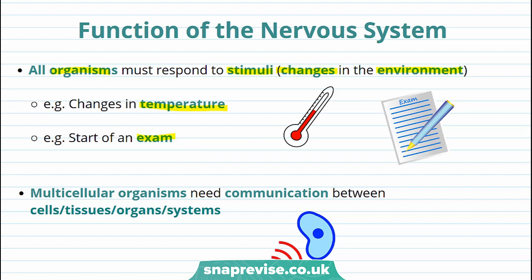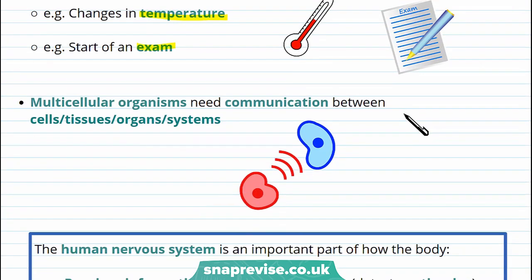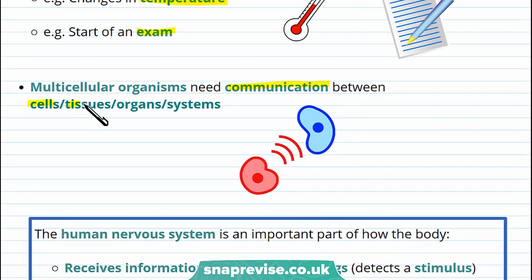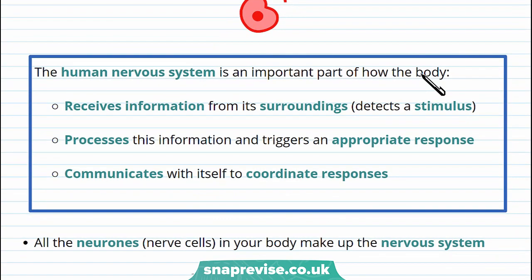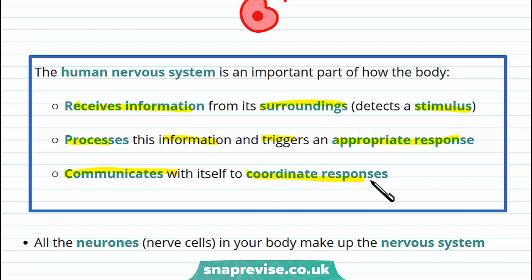In order to respond to these stimuli and react to these changes, multicellular organisms need communication between cells, tissues, organs, and systems. The human nervous system receives information from its surroundings and detects a stimulus or a change in the environment. It then processes this information and triggers an appropriate response — for instance, if you're too cold, your body starts to shiver. It also communicates with itself to coordinate responses, meaning if there are lots of different responses, the body can do this all at once.